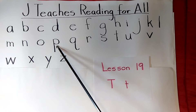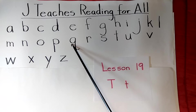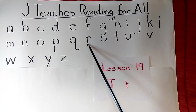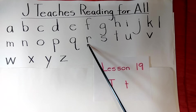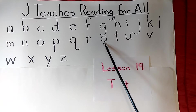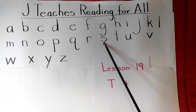P — P, pig. Q — Q, quarter. R — R, rake. S — two sounds: snake, or the Z sound, zipper.